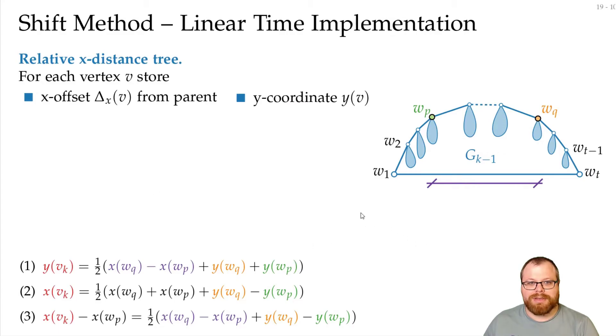So we want to calculate a relative x distance tree. So that in the end, when we know the x coordinates for V_1 and V_2, then we can calculate the x coordinate for everybody else. And the y coordinates we just store explicitly.